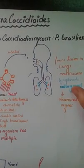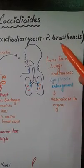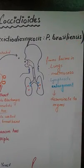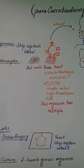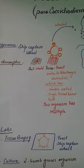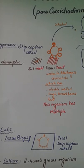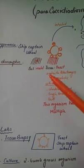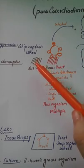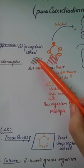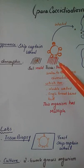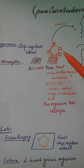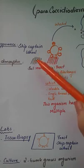The causative organism is Paracoccidioides brasiliensis. This organism is dimorphic, meaning that at certain temperatures it attains a different type of structure. When present in the soil it exists in the form of mold, whereas when it enters the human body it turns into yeast.